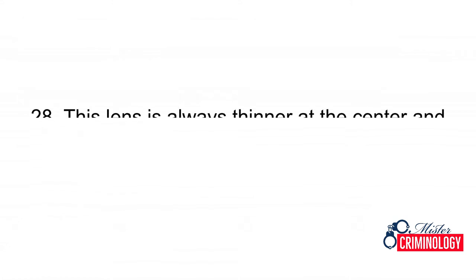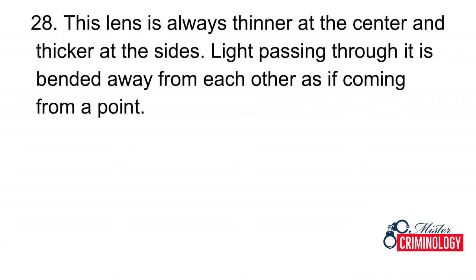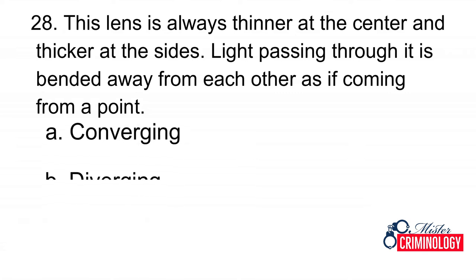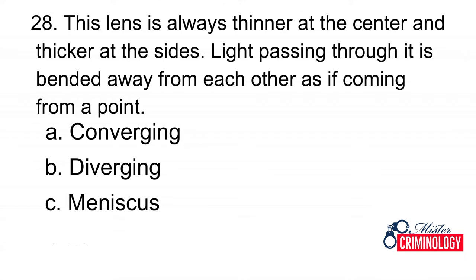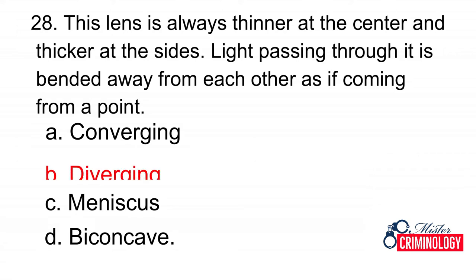Question 28: This lens is always thinner at the center and thicker at the sides. Light passing through it is bent away from each other as if coming from a point. A. Converging, B. Diverging, C. Meniscus, D. Biconcave. Answer: B. Diverging.